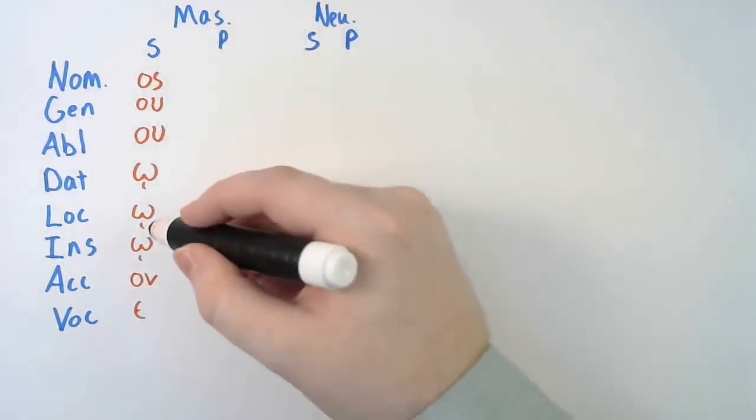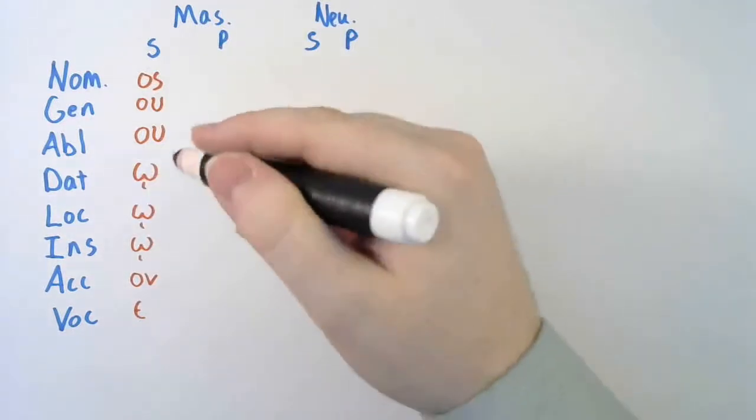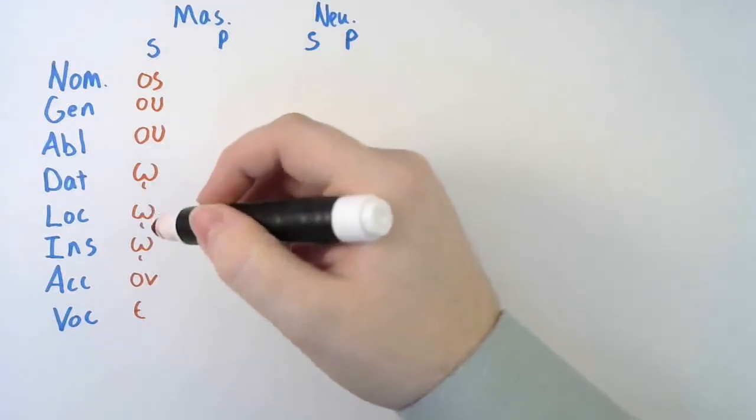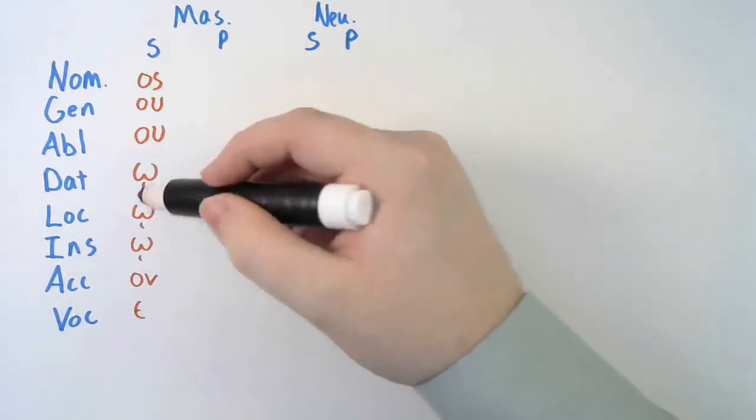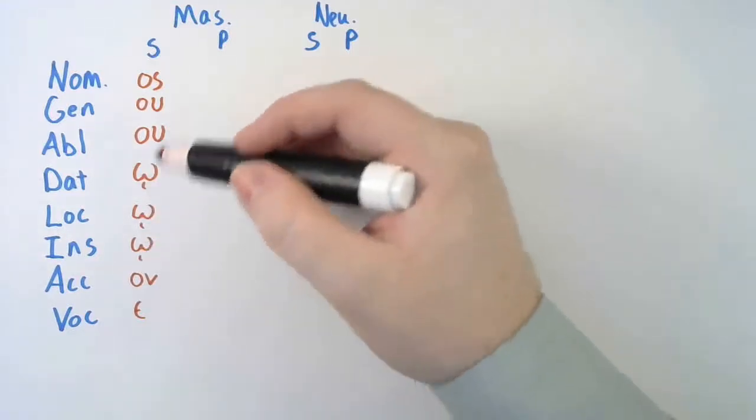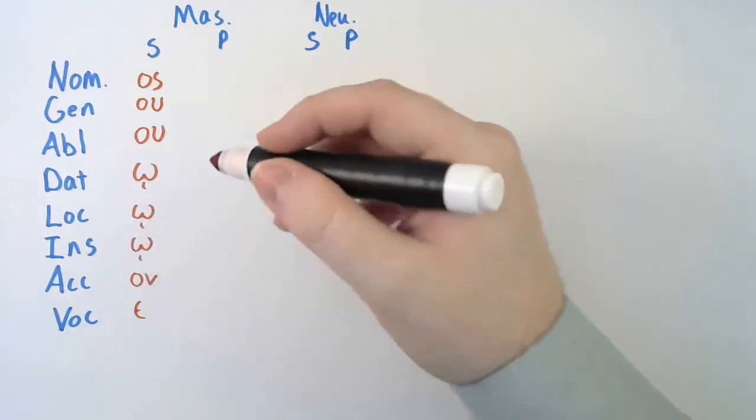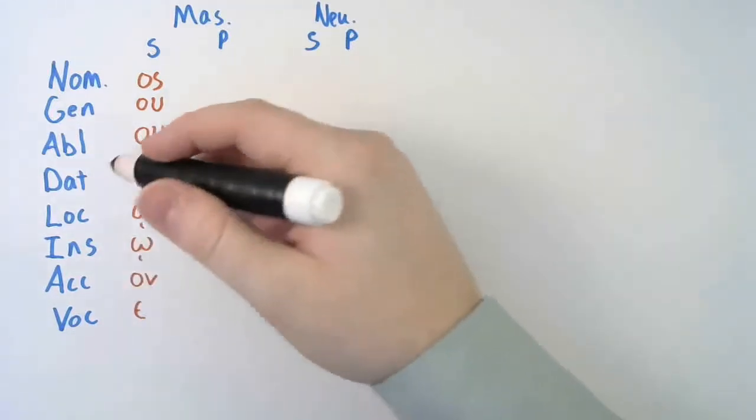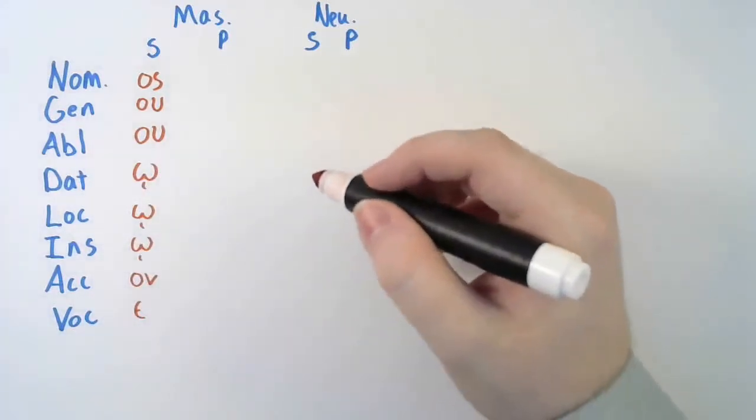Remember, the iota subscript doesn't affect the pronunciation, but it is a vital part. And this is one of the reasons I say that, because without the iota subscript, it'd be hard to tell it's a dative locative or instrumental. With it, you can tell quickly that that's what it is, because that's how you spell the ending for the dative, the locative and the instrumental. So don't forget your iota subscripts.